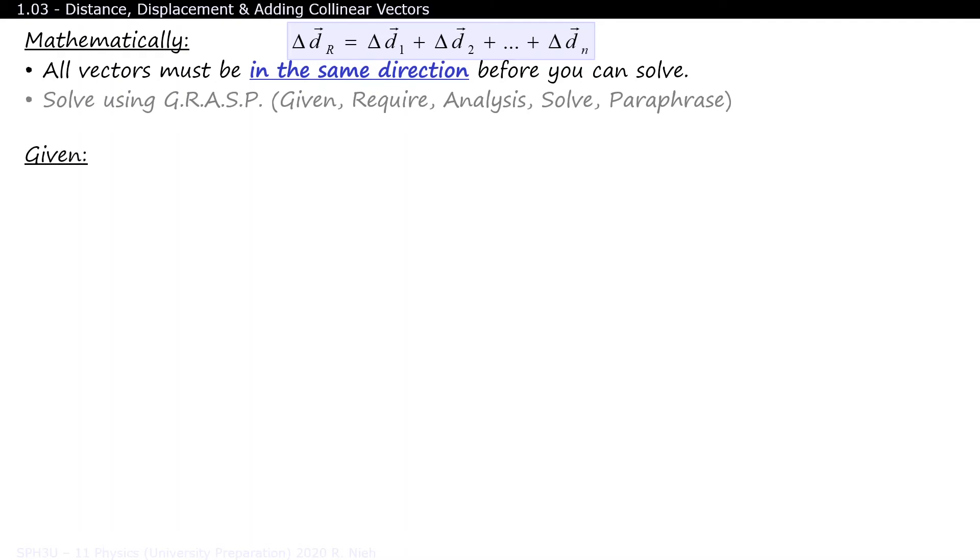The first thing that you do when you solve a word problem is to tell the reader what numbers you know. These are your givens. D1 is 2 meters west, D2 is 12 meters west, and D3 is 8 meters east. R is for require. In other words, what value are you looking for? A delta dr followed by a question mark is sufficient.